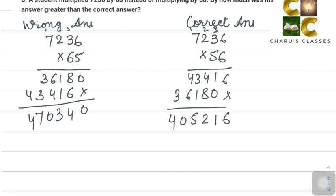The correct answer would have been 405,216. So we are going to subtract: 470,340 minus 405,216.